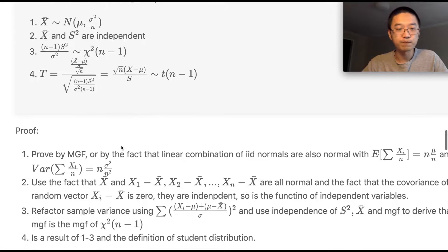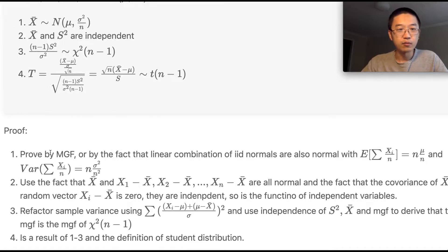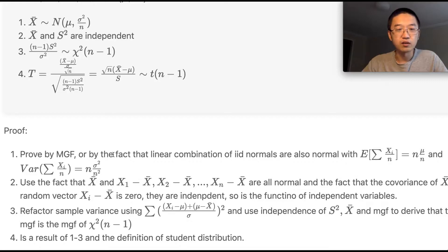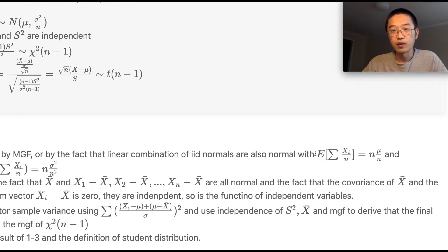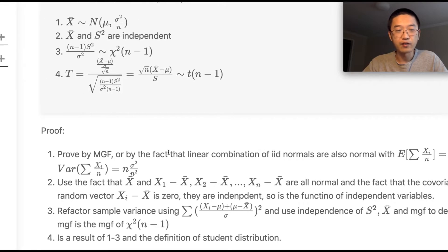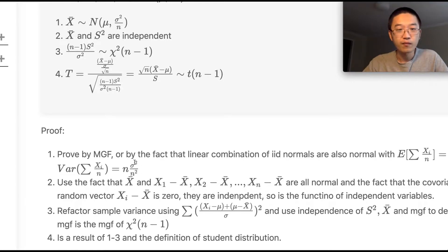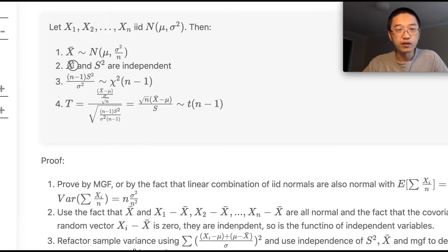Let's prove these. For the first result, the sample mean follows a normal distribution. One simple way is to use MGFs, or use the fact that a linear combination of i.i.d. normals is also normal with mean μ and variance σ²/n. For the second result, we want to prove that the sample mean and sample variance are independent.